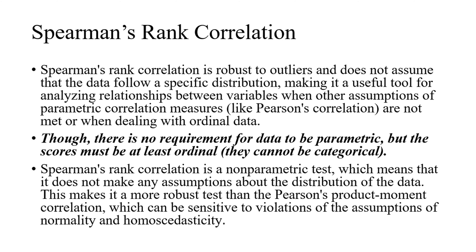Spearman's rank correlation is robust to outliers, unlike Pearson's correlation. It does not assume that data follow a specific distribution, making it a useful tool for analyzing relationships between variables when other assumptions of parametric correlation measures like Pearson's are not met, or when dealing with ordinal data. Though there is no requirement for data to be parametric, scores must be at least ordinal — they cannot be categorical.